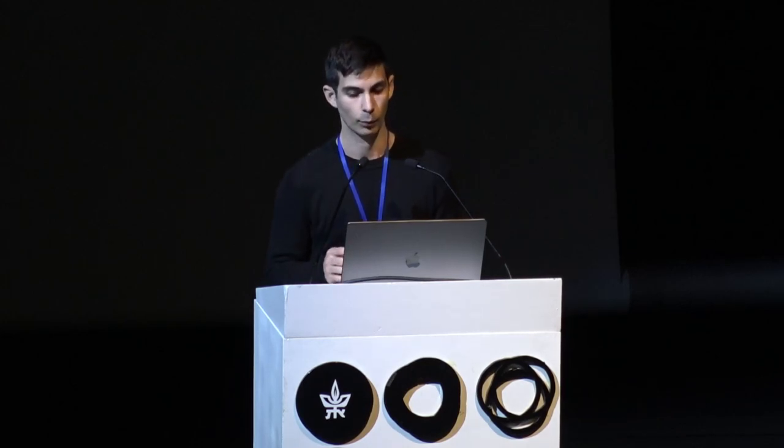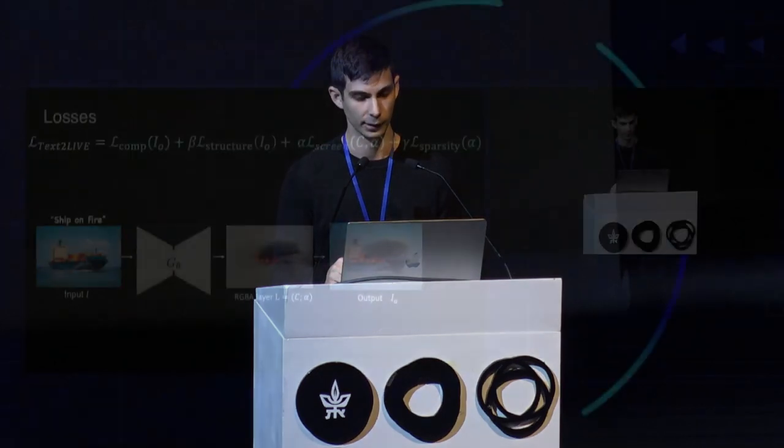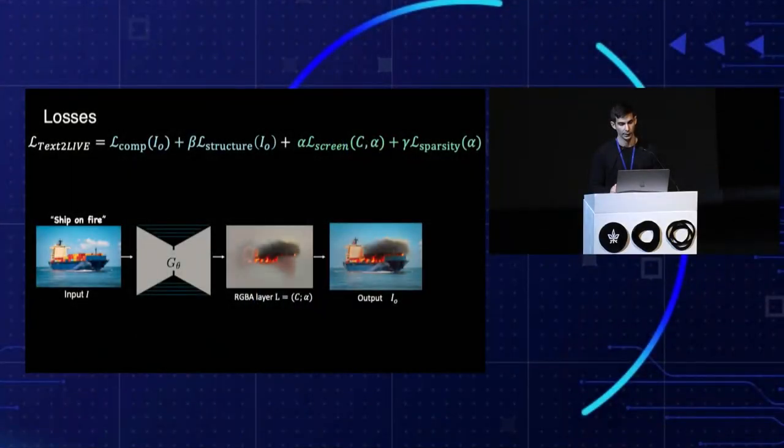Rather than directly predicting the edited image, our key idea is to generate an RGBA edit layer — color and opacity — which is then composited over the original image. This allows us to better control the localization and the generated content by applying novel losses both on the final composite and on the edit layer itself.